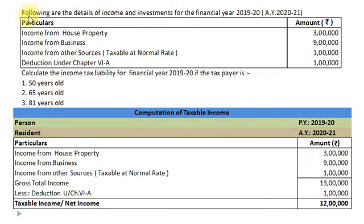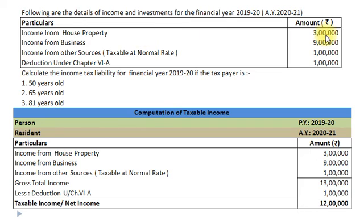Here is the question. Following are the details of income and investments for the Financial Year 2019-20, Assessment Year 2020-21. Particulars of income and amount: Income from House Property – Rs. 3 lakh; Income from Business – Rs. 9 lakh; Income from Other Sources (taxable at normal rate) – Rs. 1 lakh; Deductions under Chapter 6A – Rs. 1 lakh.